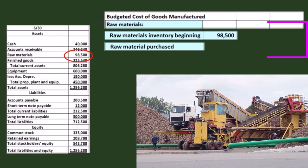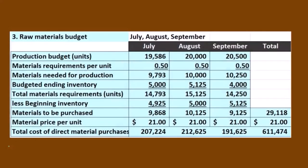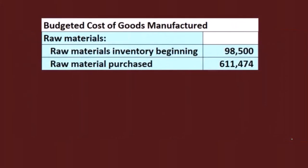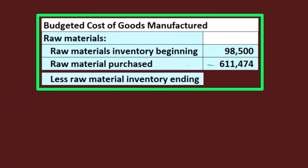How much are we going to buy? We figured that out earlier in the raw materials budget, and we came out to raw materials purchases of $611,474. That's what we're going to put right there as our purchases. Then we're going to have less the raw materials ending inventory, similar to the cost of goods sold calculation.